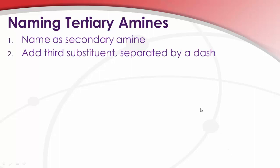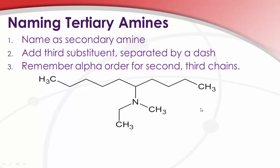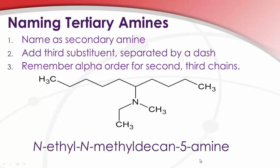Tertiary doesn't really look much different. All we're going to do is separate by a dash and use alpha order for the second and third chains. So we still have our decan-5-amine, unless I miss my guess. And all we're going to say is that we have N-ethyl, N-methyl, decan-5-amine. N-ethyl, N-methyl, decan-5-amine. Hey, I think I'm getting this down.